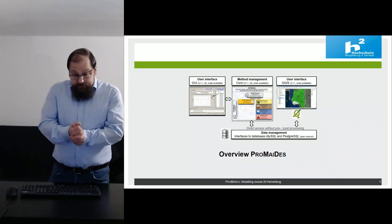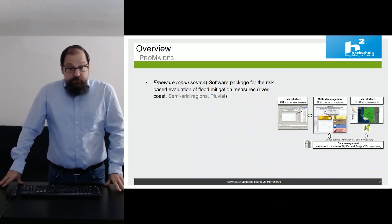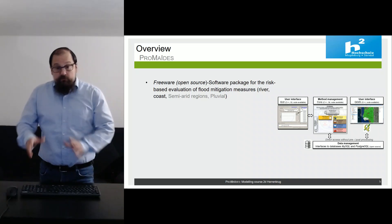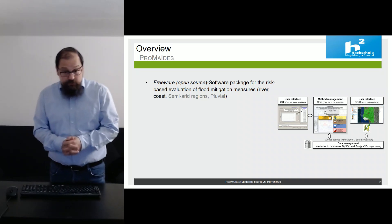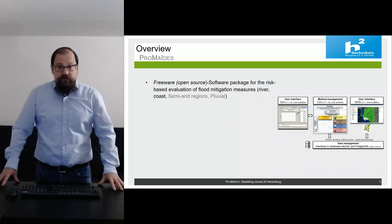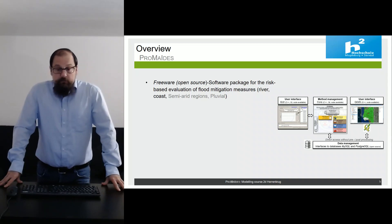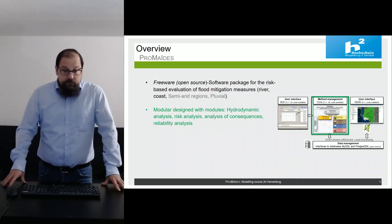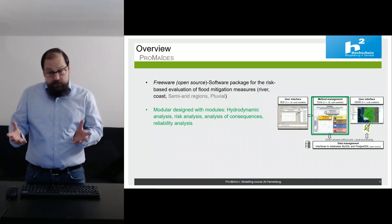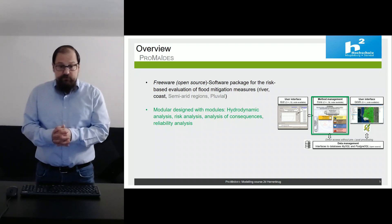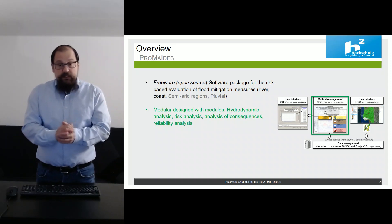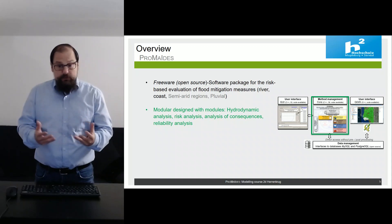A short overview over PROMATIS. What is PROMATIS? PROMATIS is a free open-source software package for the risk-based evaluation of flood mitigation measures for riverine regions. We have applied it in coastal regions, and currently we are working in semi-arid regions with flash floods and also pluvial flooding. It's a modular design software package, with modules for hydrodynamic analysis, risk analysis, analysis of consequences, and reliability analysis. Today we will focus on the HUT module, the hydrodynamic analysis.